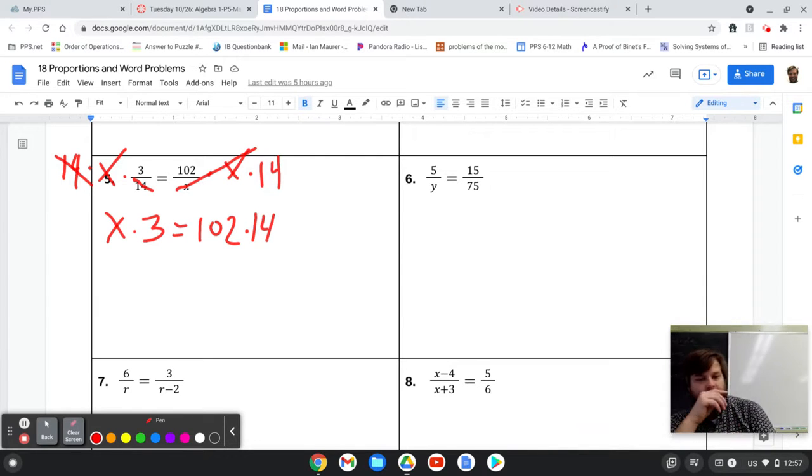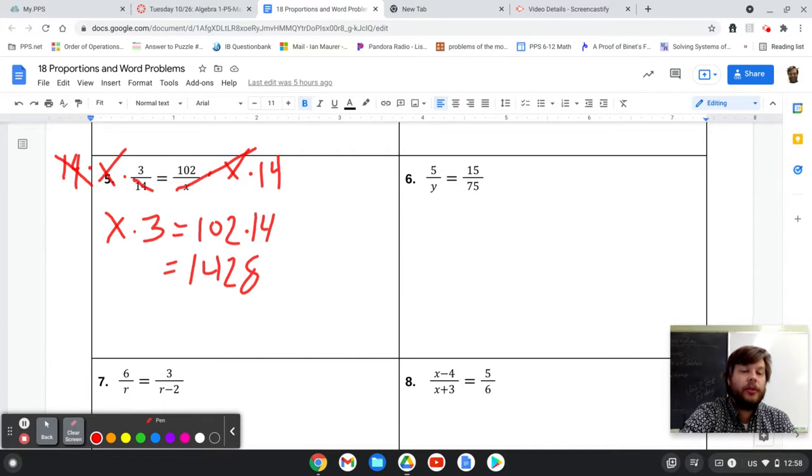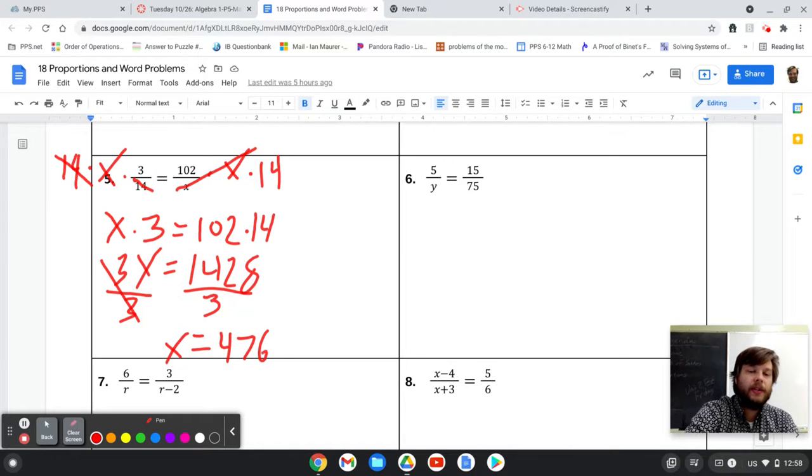I'm going to grab a calculator to do 102 times 14. 102 times 14. 1428. Makes sense. Equals 3x, and then divide by 3 because that's how you cancel multiplication. x equals 476.